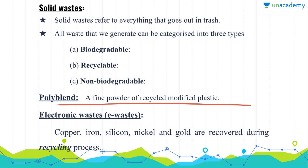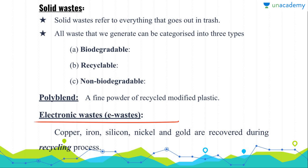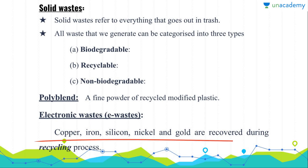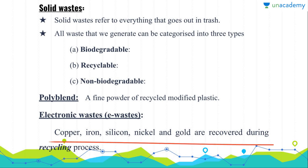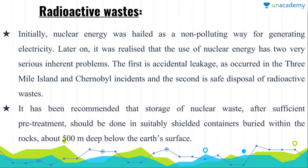Now we have electronic waste, that is e-waste. Copper, iron, silicon, nickel and gold are major constituents of e-waste and they can be removed only during the recycling process. Please make sure you remember all these names because they are very important from the point of view of prelims.